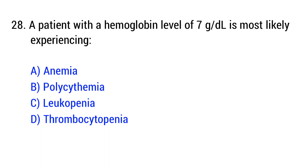Question number 28. A patient with a hemoglobin level of 7 g/dL is most likely experiencing? The right answer is option A: Anemia.